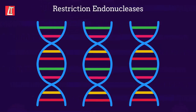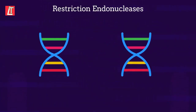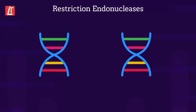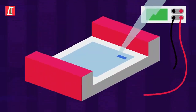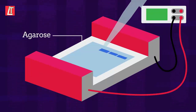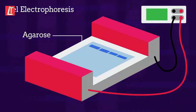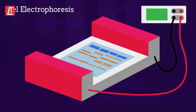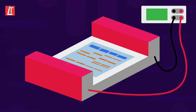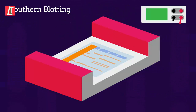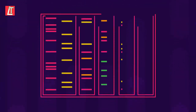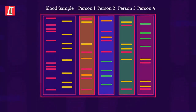Special enzymes called restriction endonucleases are used to cut the DNA up into different size pieces. The DNA samples are then put into wells in a special gel called agarose for the process of gel electrophoresis, which separates the DNA fragments by size. The pattern is then transferred to a nylon sheet in southern blotting. Finally, the lines produced by the DNA samples from different people are compared.